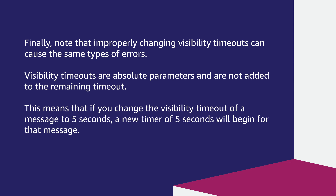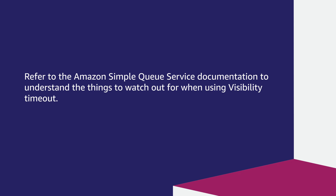Finally, note that improperly changing visibility timeouts can cause the same type of errors. Visibility timeouts are absolute parameters and are not added to the remaining timeout. This means that if you change the visibility timeout of a message to five seconds, a new timer of five seconds will begin for that message. Refer to the Amazon Simple Queue Service documentation to understand the things to watch out for when using visibility timeout.